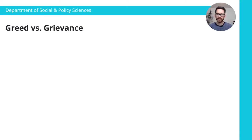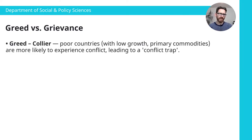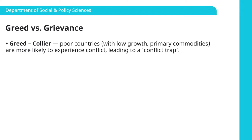What I'll do now is briefly sketch out the positions of the two most prominent figures who tend to act as figureheads for both sides of this debate. On the greed side, the most prominent figure is Paul Collier, who has been very influential — he's a professor in economics at Oxford University. The broad argument that Collier puts forward is that basically it's poor countries, particularly those with low rates of economic growth and those that are reliant on primary commodities, that are at greater risk of experiencing conflict.